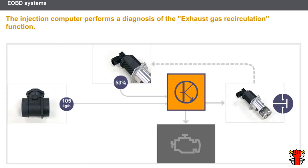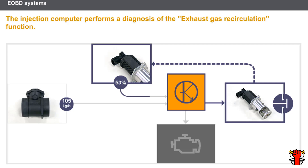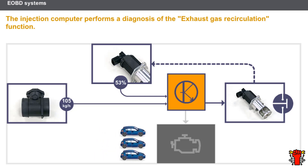The injection computer also performs a diagnosis on the exhaust gas recirculation function. The computer compares the programmed opening value for the EGR valve to its true value provided by the position sensor. Also, the airflow signal enables the computer to check that the recirculation is operating correctly. In the event of an inconsistency, the computer diagnoses a fault. If the fault is detected in three consecutive trips, the EOBD warning light is activated.